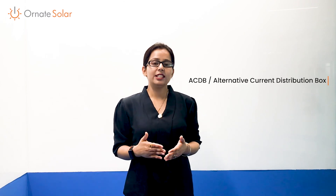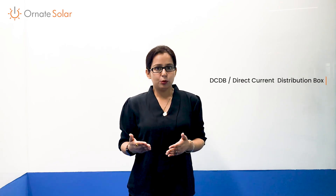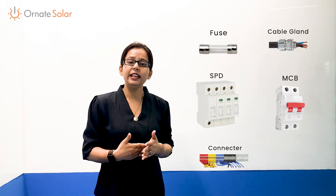So let's take a minute to understand these inexpensive solar protection parts — that is ACDB, which is Alternating Current Distribution Box, and DCDB, that is Direct Current Distribution Box — and their important role in our solar project. The ACDB and DCDB boxes are usually used as protection devices to reduce system failure.